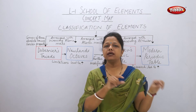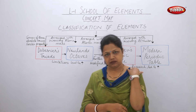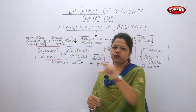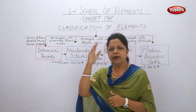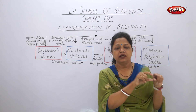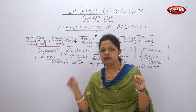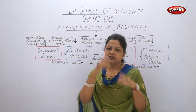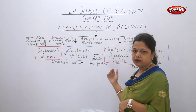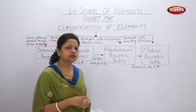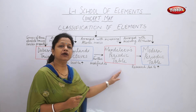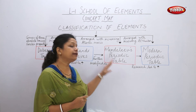Mendeleev arranged all elements in increasing order of atomic masses and placed them in vertical and horizontal columns. He arranged elements in rows until he found the next element similar to the earlier row. This is how he created Mendeleev's Periodic Table, which was based on increasing order of atomic masses, but it also had some limitations.